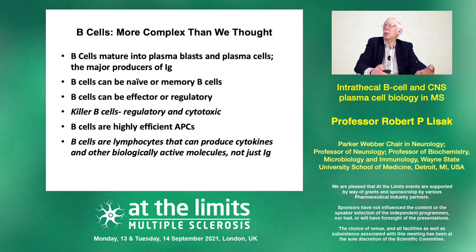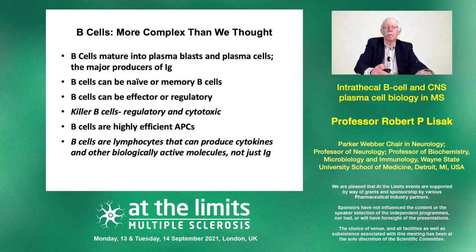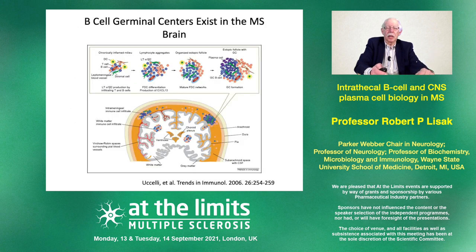A brief summary: B-cells are more complex than we thought. Besides becoming plasmablasts and making immunoglobulins, they're regulators, effectors, antigen presenting cells, and since they are lymphocytes they can produce cytokines — which plasma cells do as well. Those cytokines can have up- and down-regulatory functions, and perhaps even cytotoxic functions, because there are regulatory B-cells that work by killing, from work out of the University of Michigan in general biology.